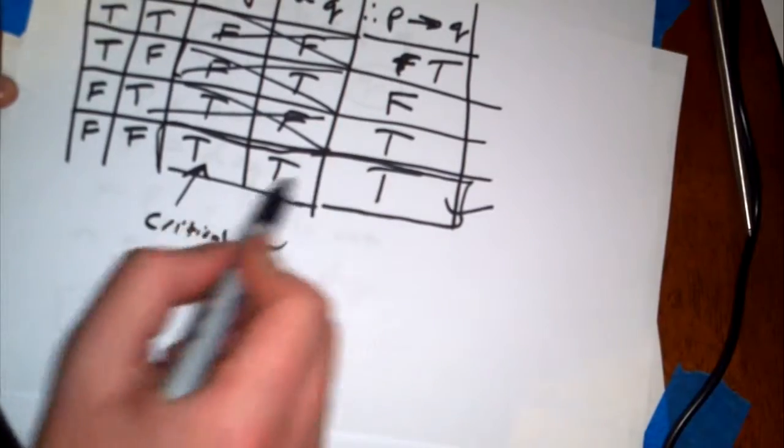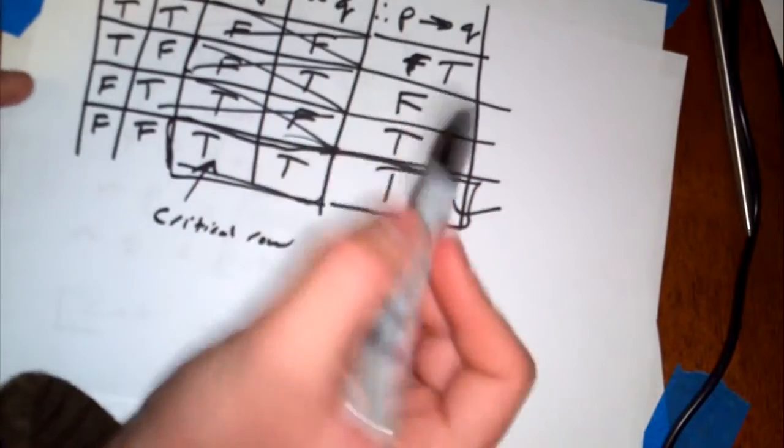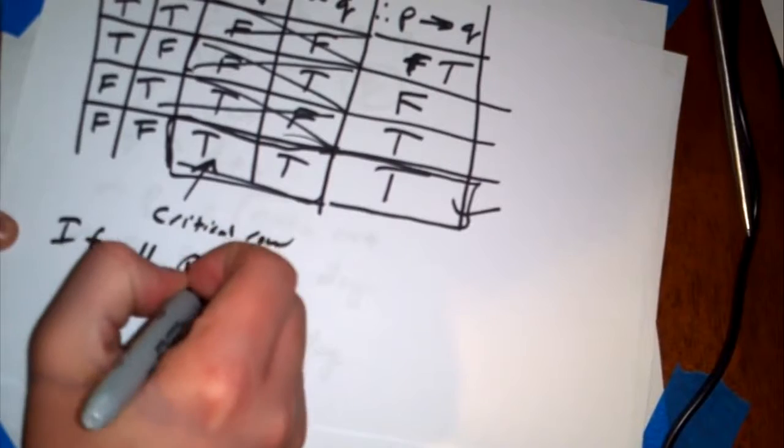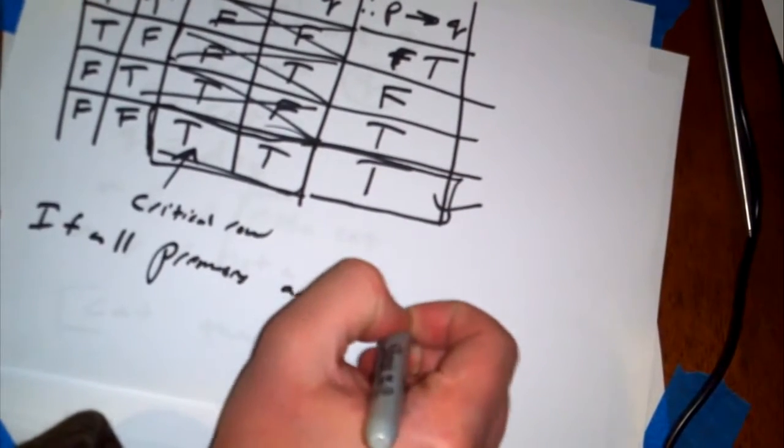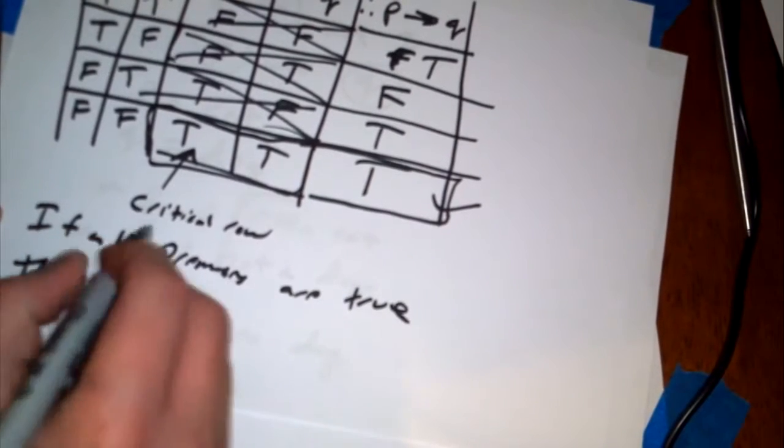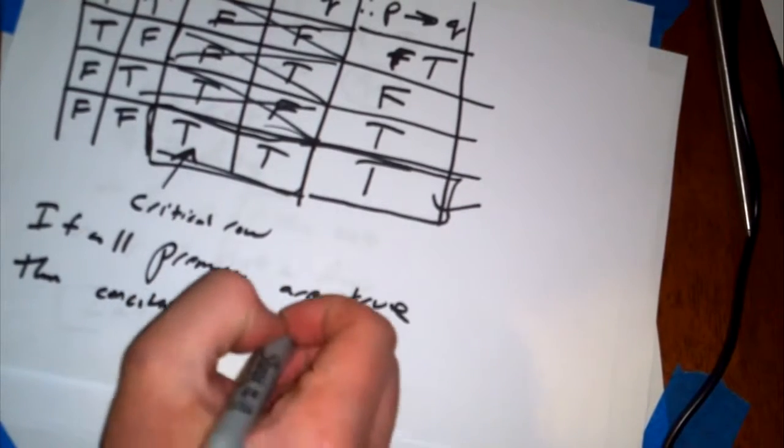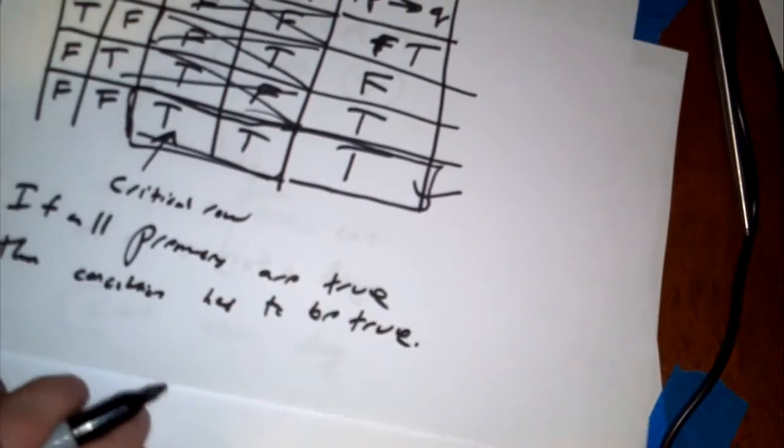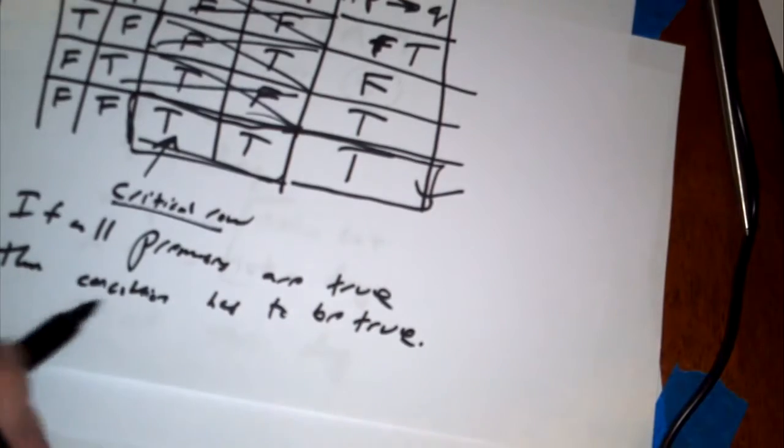As long as there are two true statements, or at least since there's only two premises, all the premises, if all the premises are true, then the conclusion has to be true. That's the basics of a critical row and checking to see if a given statement is true.